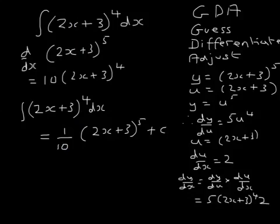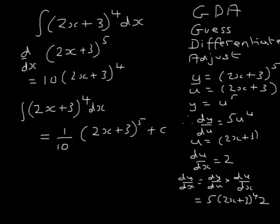And that's how this GDA business works. 'Guess' doesn't mean just have a wild guess — it means have a sensible, intelligent guess. Why did I guess to the power of 5? Because when you integrate, the powers always go up by 1. So I just took that bracket and tried differentiating it to the power of 5 to see what happens. The answer I got was 10 times too big — that's 5 times 2 equals 10 from the chain rule. When I differentiated (2x + 3) to the power of 5, I got 10 lots of that, so I adjusted and divided by 10 to get the final answer.